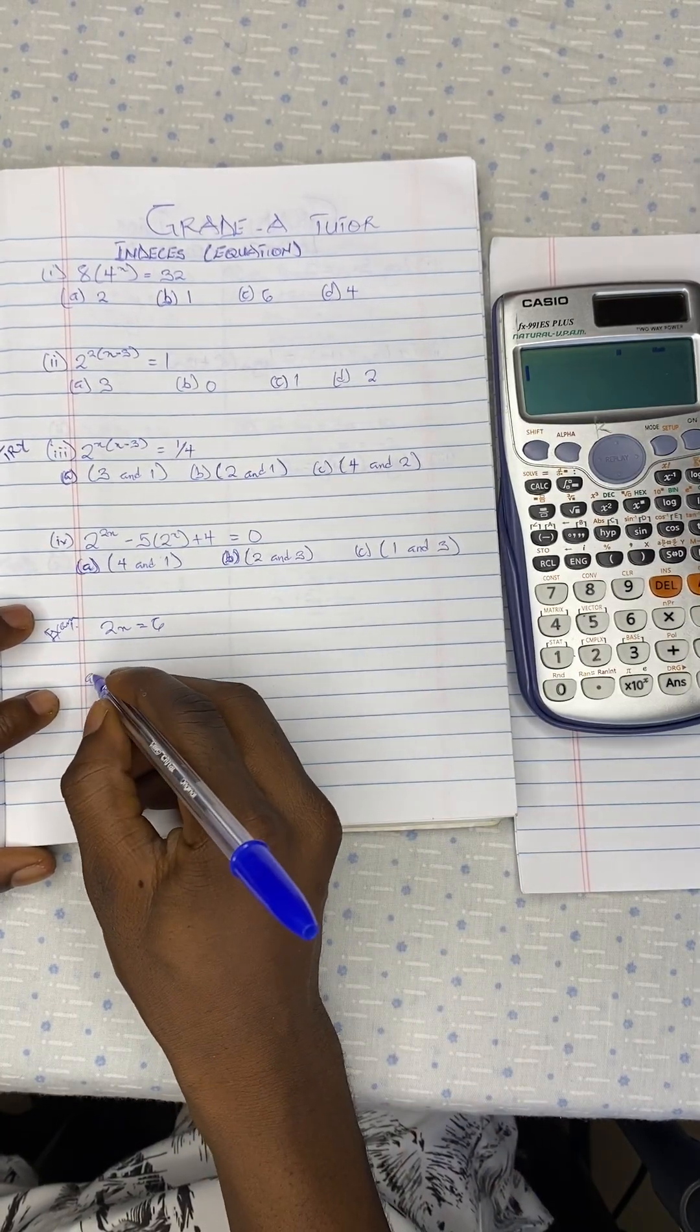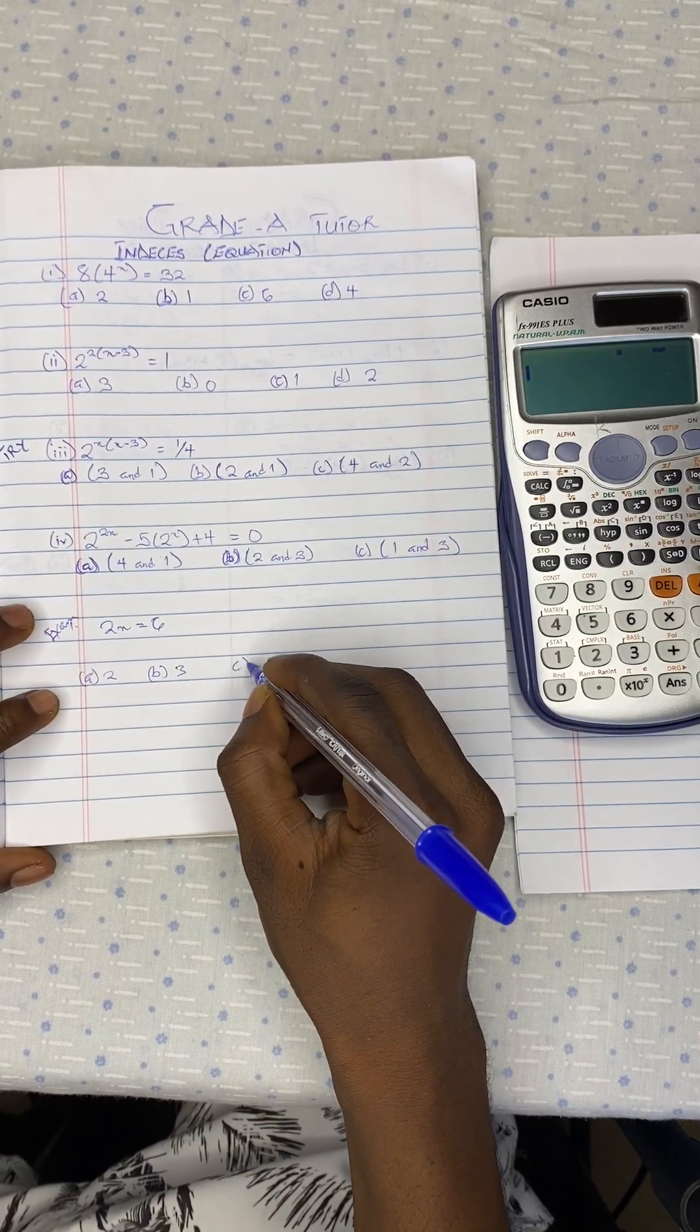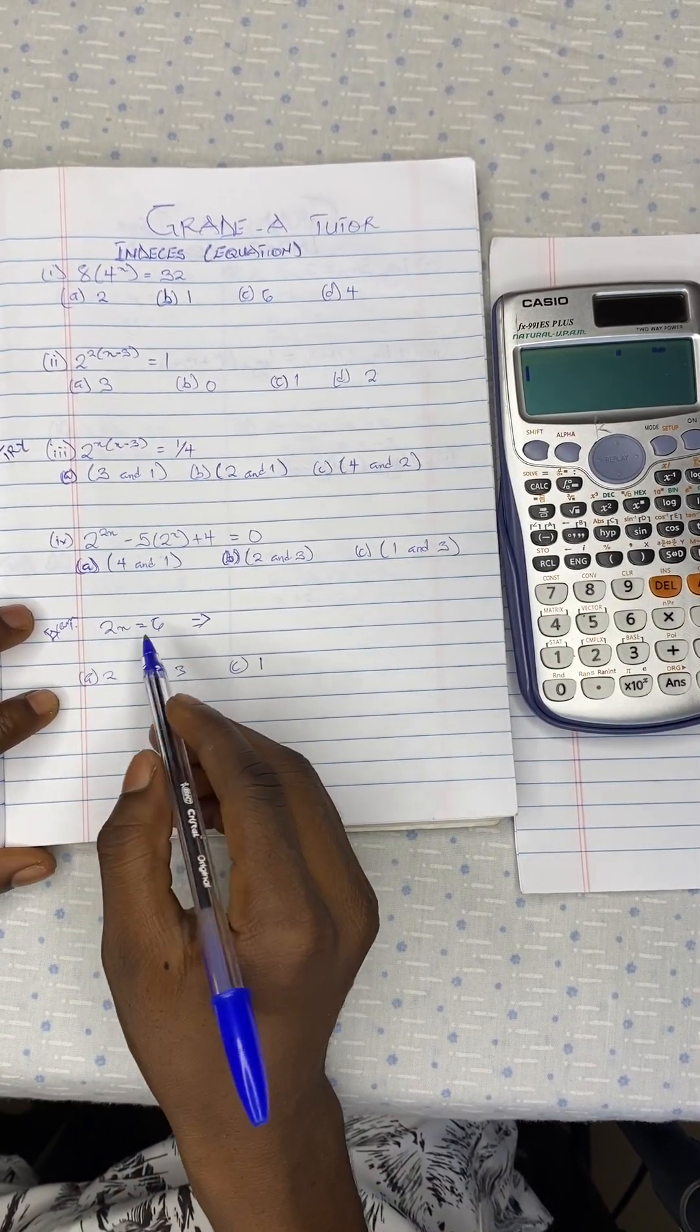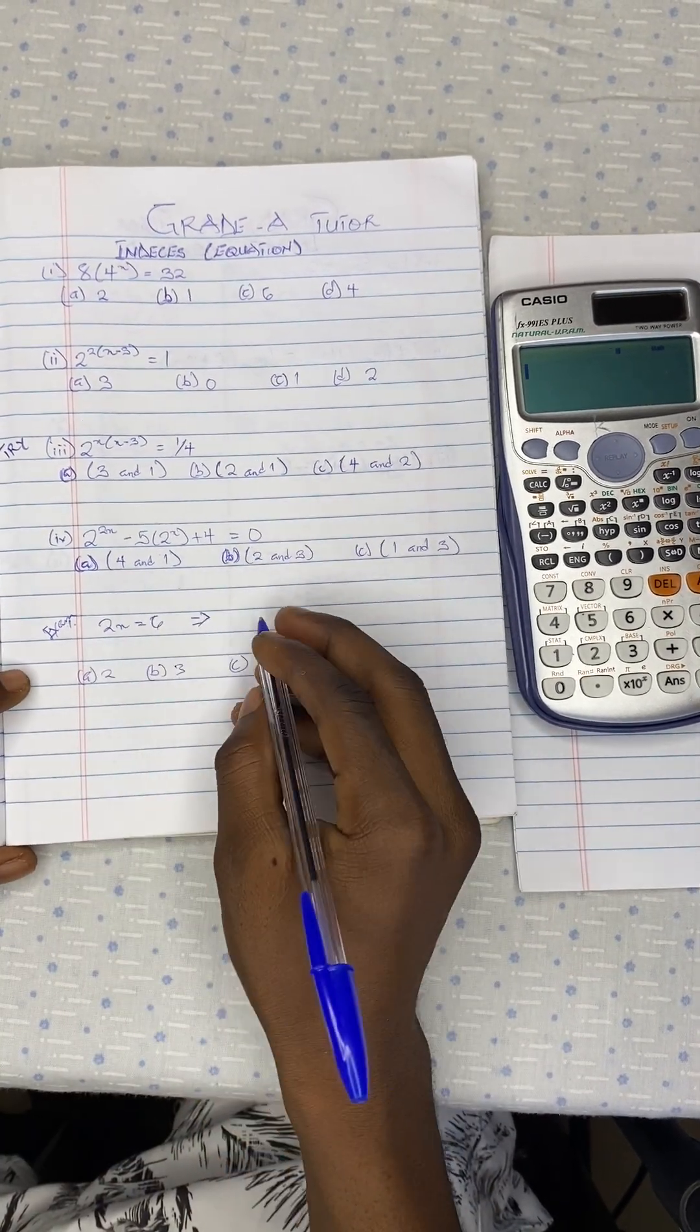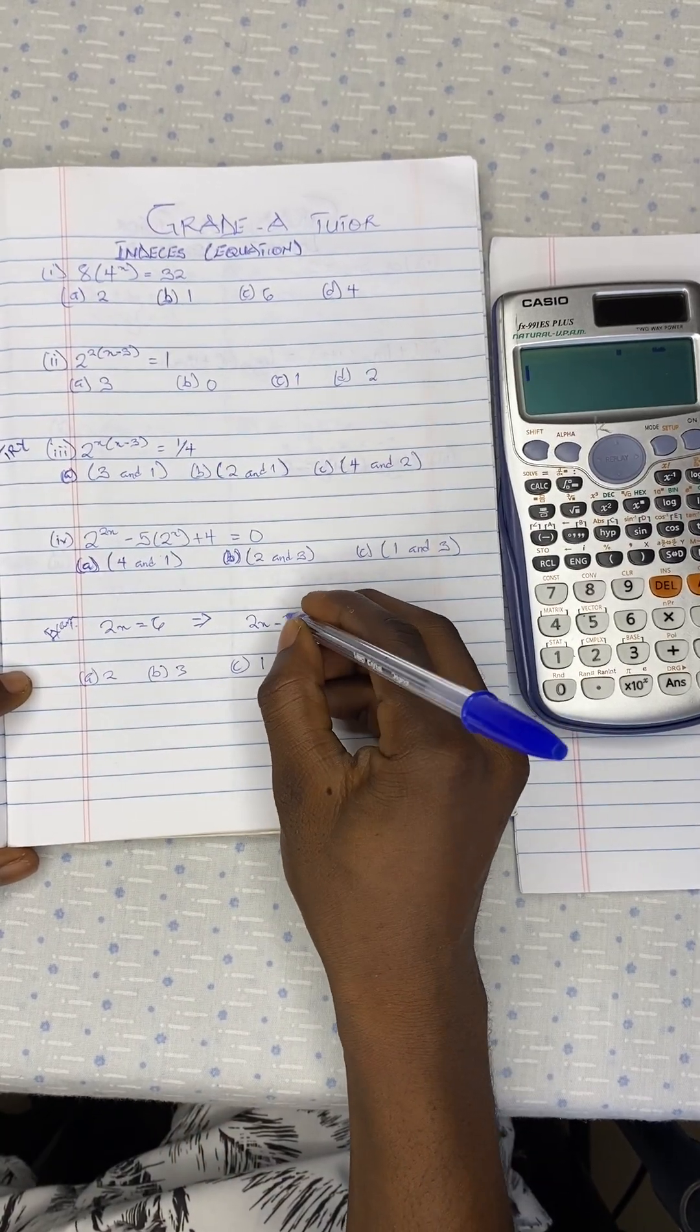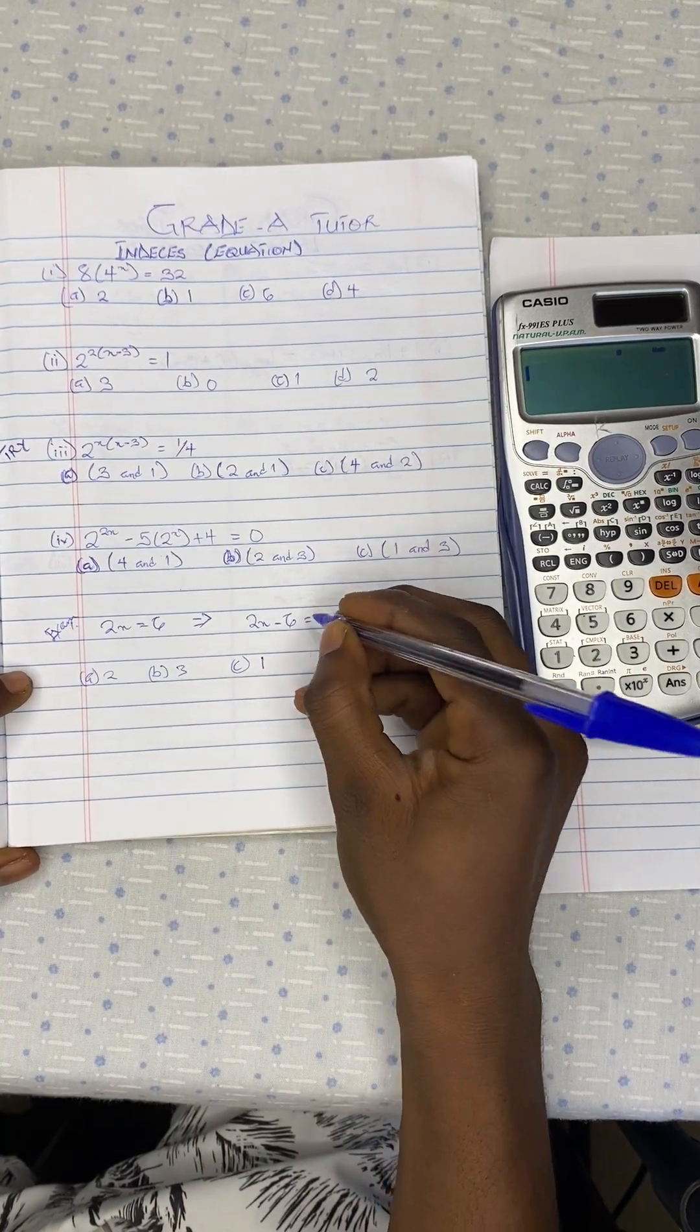and you have been given options a to be 2, b to be 3, and c to be 1. This is what you are going to do. You are going to group all the values and the variables on your left hand side so that your results will be equal to 0. So it is going to be 2x minus 6 equal to 0.